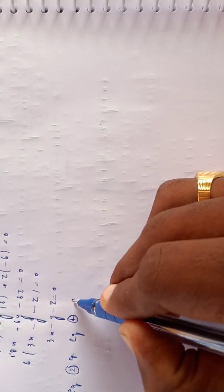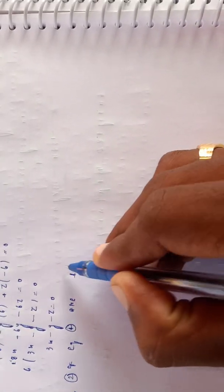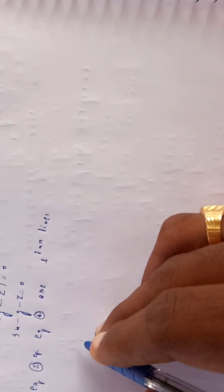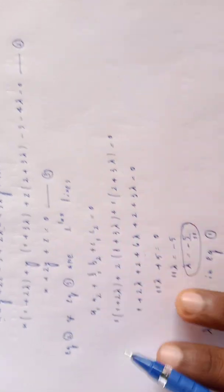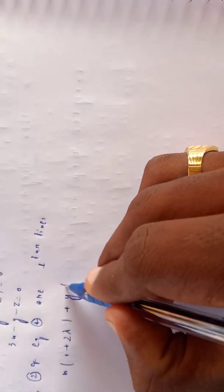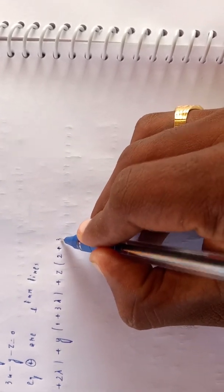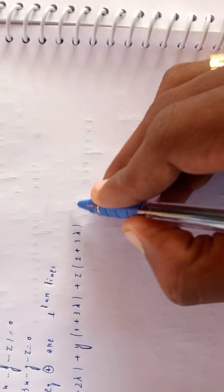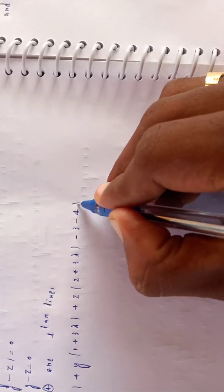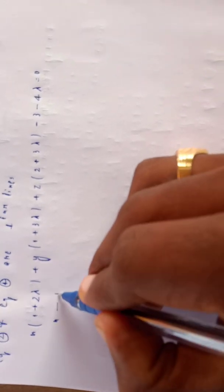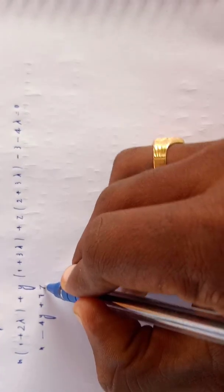Equation number 4 is x - 4y + 7z - 13 = 0. This plane through L2 is perpendicular to L1. Checking: coefficient form X(1+2λ) + Y(1+3λ) + Z(2+3λ) - 3 - 4λ, giving equation 4: x - 4y + 7z - 13 = 0.